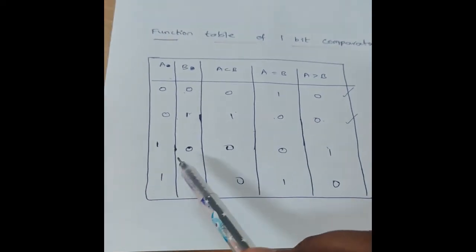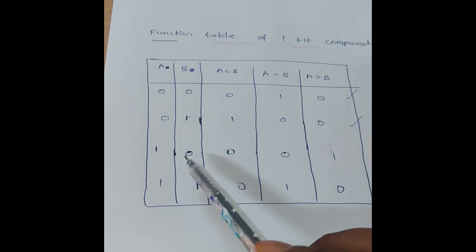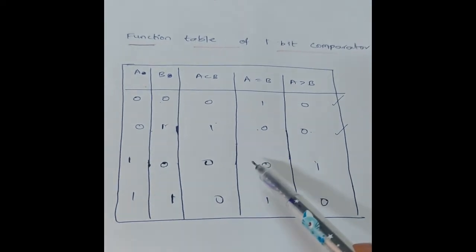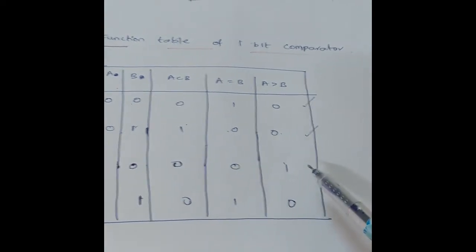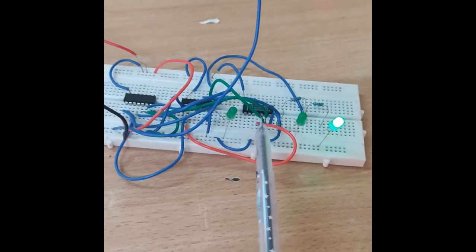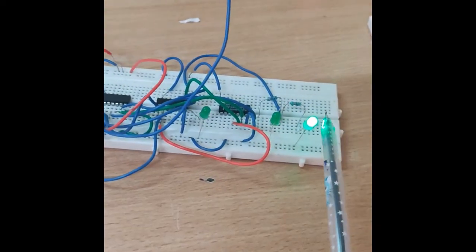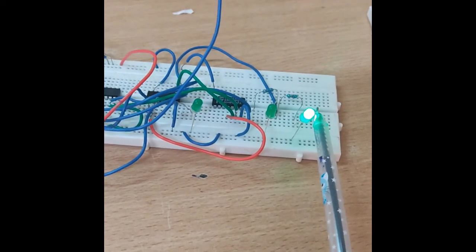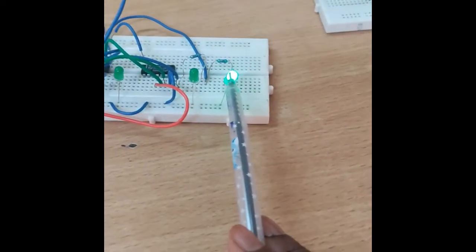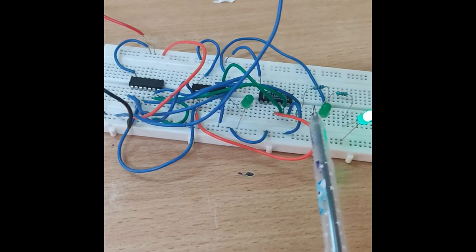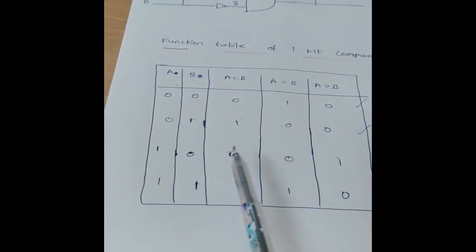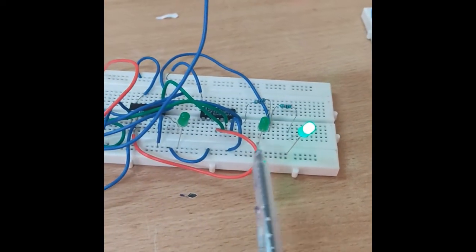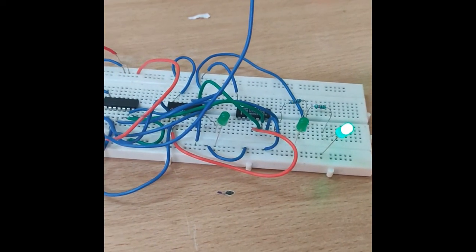Third combination — inputs are one zero. Outputs are zero zero one. In our circuit diagram, the A greater than B LED is on, meaning one, and the remaining are zero. So the output is zero zero one — this combination is verified.